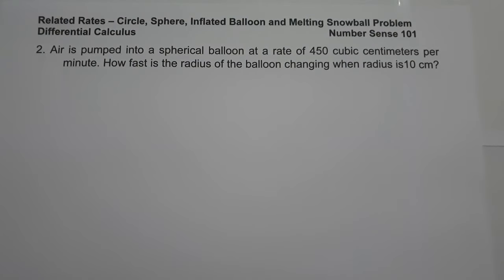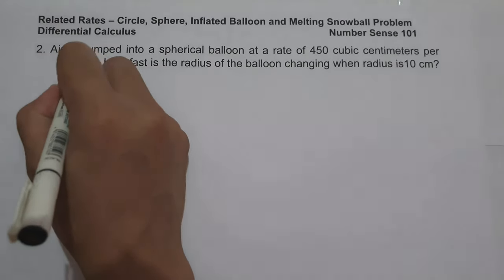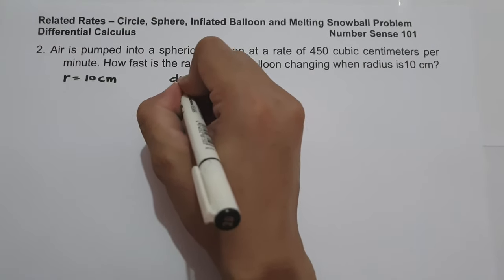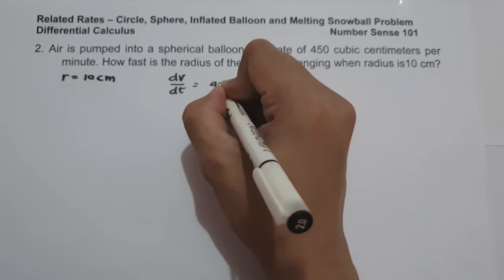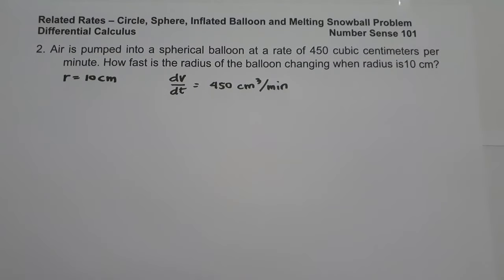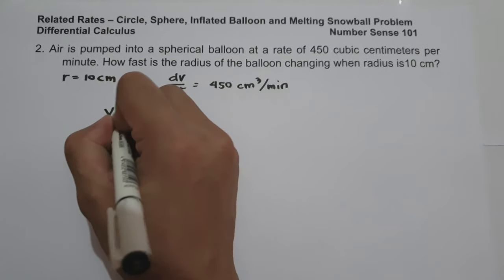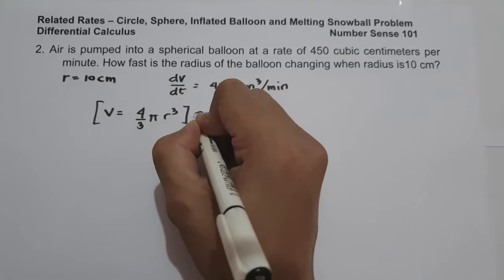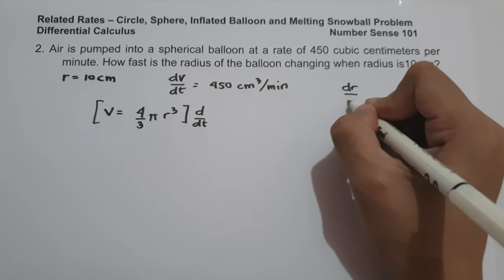On number 2, air is pumped into a spherical balloon at a rate of 450 cubic cm per minute. How fast is the radius of the balloon changing when the radius is 10 cm? Let us identify the given: radius equals 10 cm. Since cubic units are used, dV/dt equals 450 cm³ per minute. The formula for the volume of a sphere is V equals (4/3)πr³. Let us differentiate both sides with respect to time to find dr/dt.